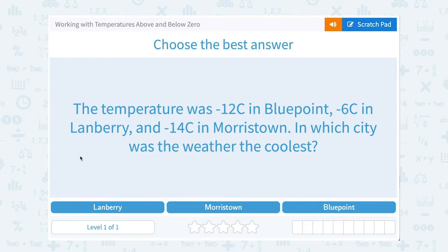Let's take a look at working with temperatures above and below zero. The temperature was negative 12 Celsius in Bluepoint, negative 6 Celsius in Lanbury, and negative 14 Celsius in Morristown. In which city was the weather the coolest?